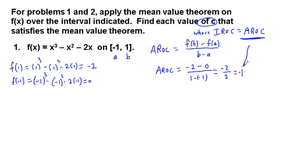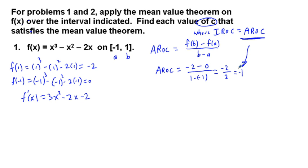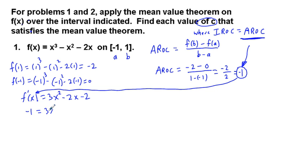Now we're going to find the instantaneous rate of change. We find f prime of x by taking the first derivative of the function: f prime of x equals 3x squared minus 2x minus 2. Now we're going to take our average rate of change of negative 1 and set it equal to f prime of x. So we get negative 1 equals 3x squared minus 2x minus 2, and the value of x that satisfies this equation will be our value of c.